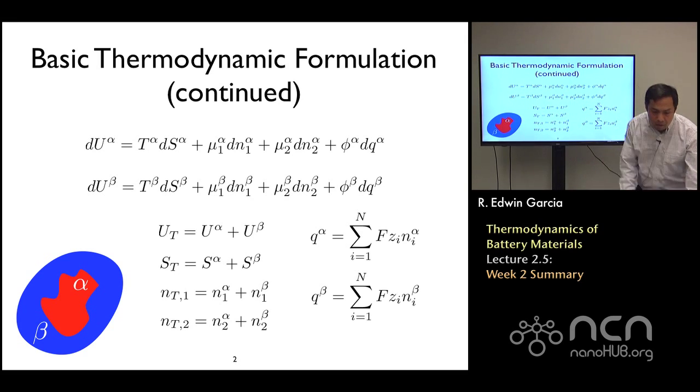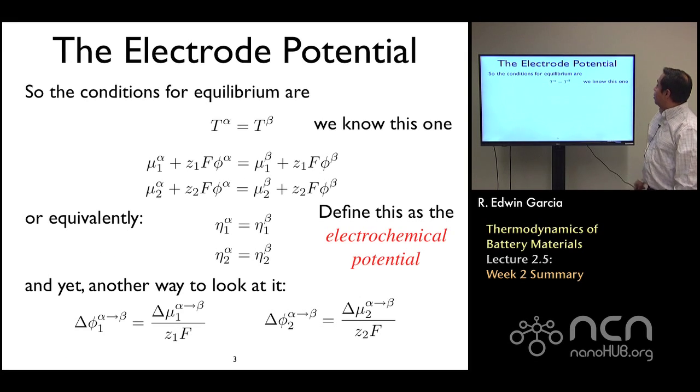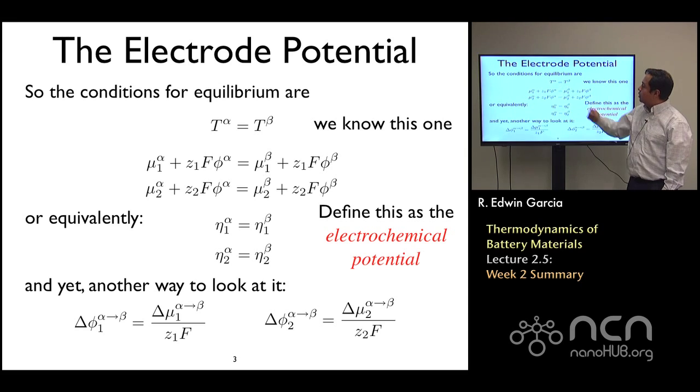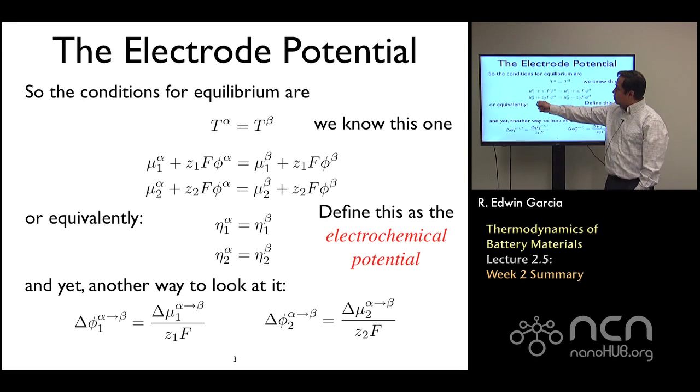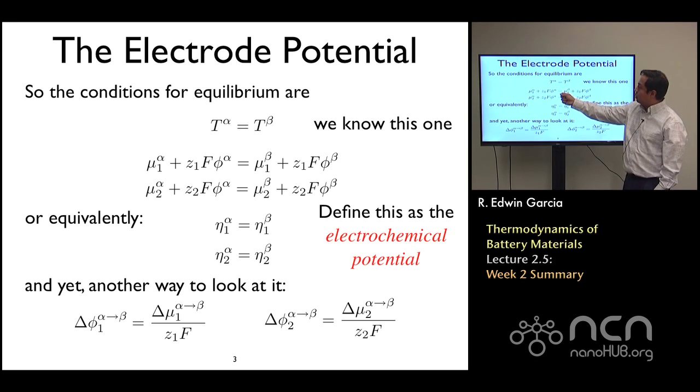By combining all these statements, we end up defining the conditions for equilibrium. We know this one, which is that at equilibrium, the temperature of the two phases is the same. However, we find these non-trivial relationships, such as the chemical potential of any of the components, plus a voltage that develops across the system, equals to the chemical potential of the other system plus a voltage shift.